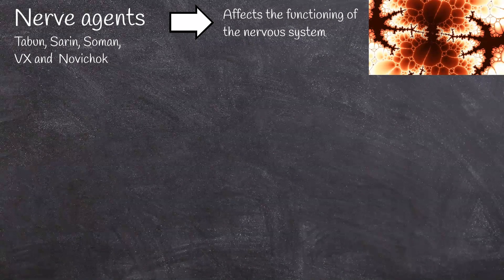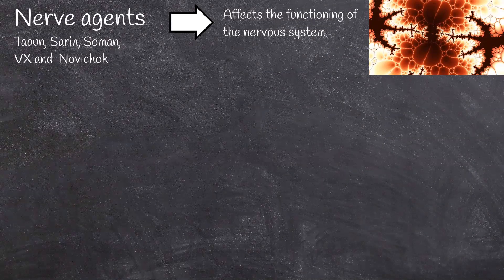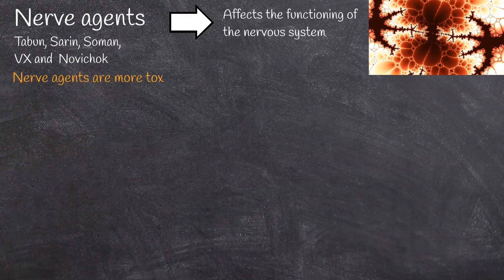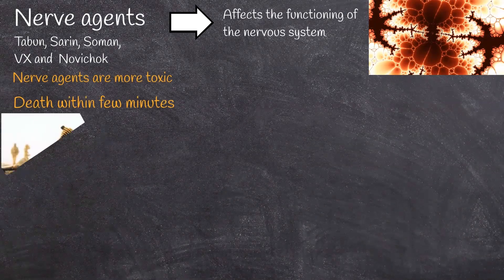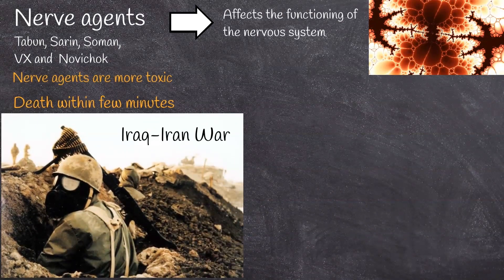Later agents include VX, which is more potent. Sarin is more stable, less volatile and less water-soluble, acting through direct skin contact and persisting in the environment up to several weeks after release. Novichok is the most potent nerve agent. Nerve agents are more toxic than other chemical weapon agents and can cause death within a few minutes to a few hours after exposure, depending on the concentration.